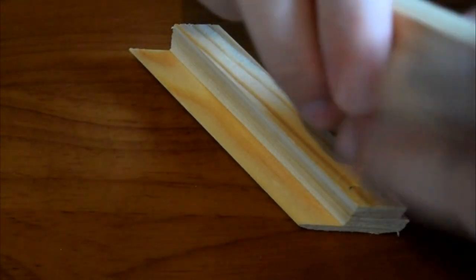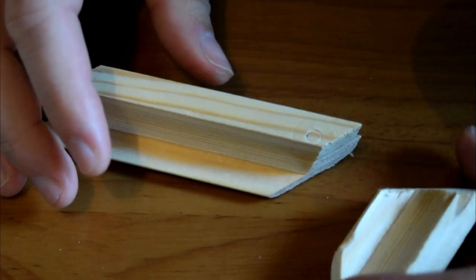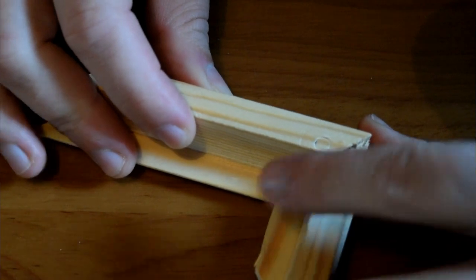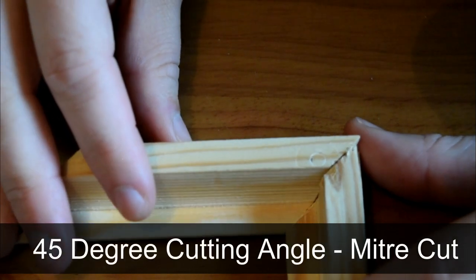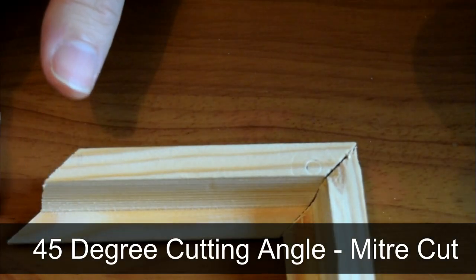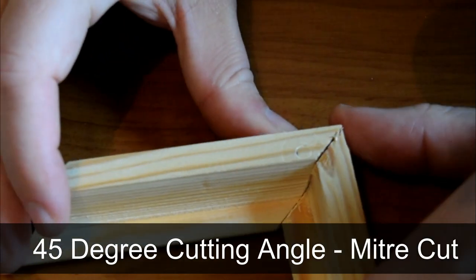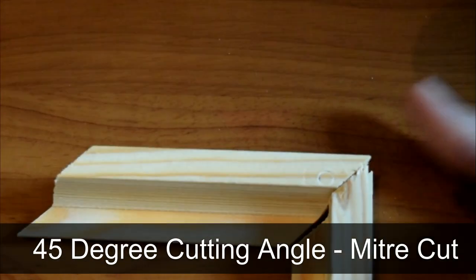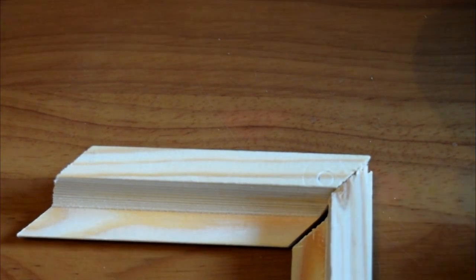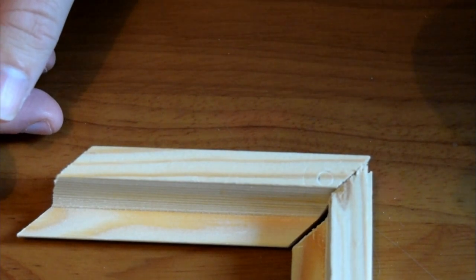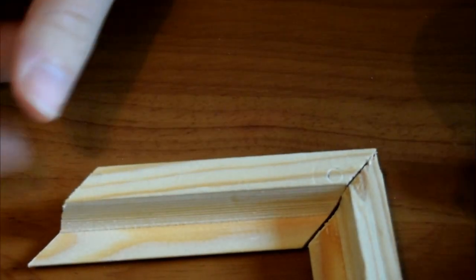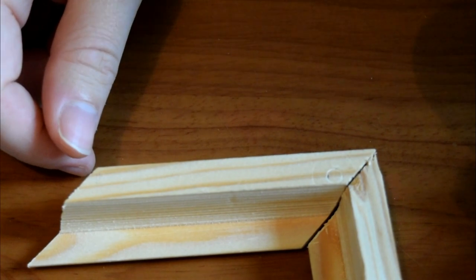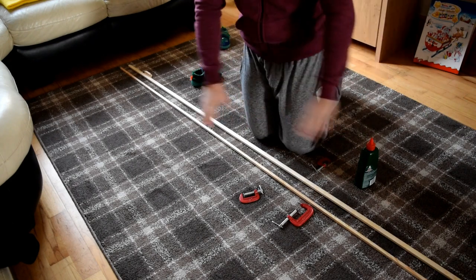Later on when we actually build the frame, you're going to need a miter box. A miter box is basically just a miter cut, and we're going to need 45-degree angles to actually cut the frame out. If you don't have a miter box, go out and get one. They're dirt cheap. We're going to be creating a frame from these pieces of pine strip wood that we're going to make now.